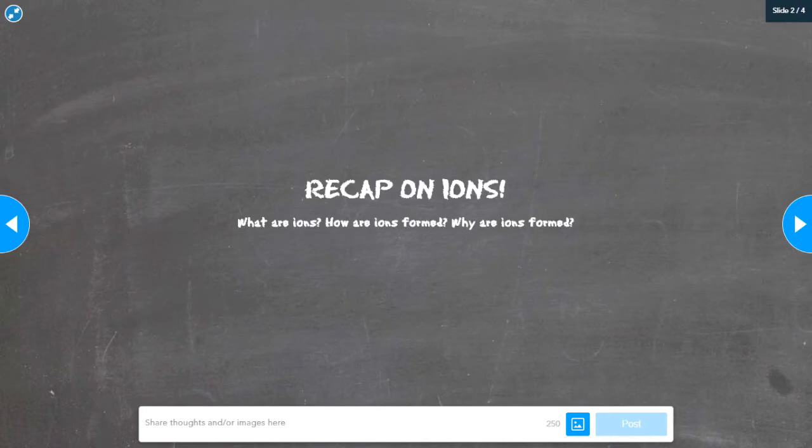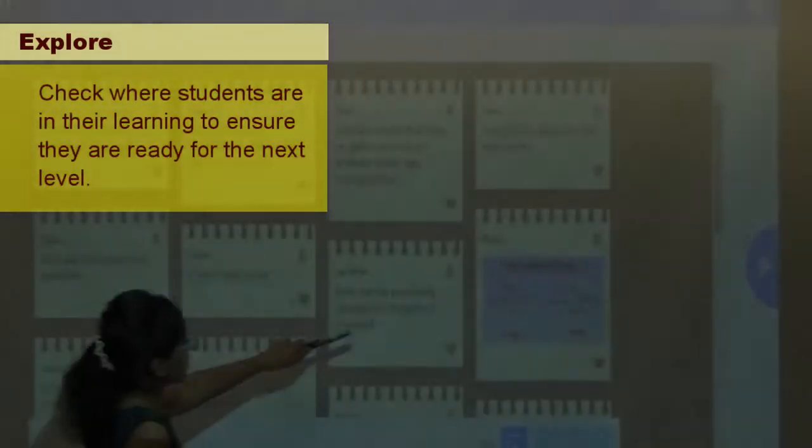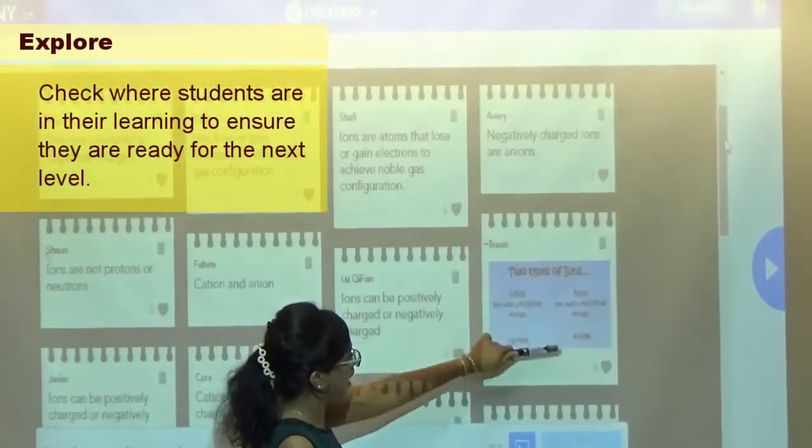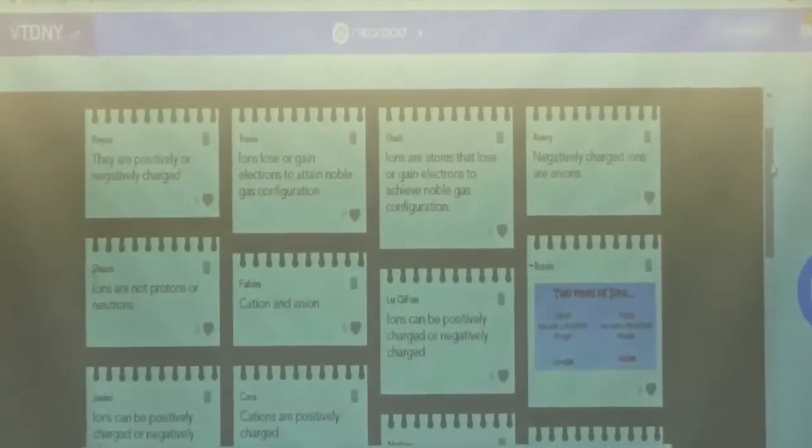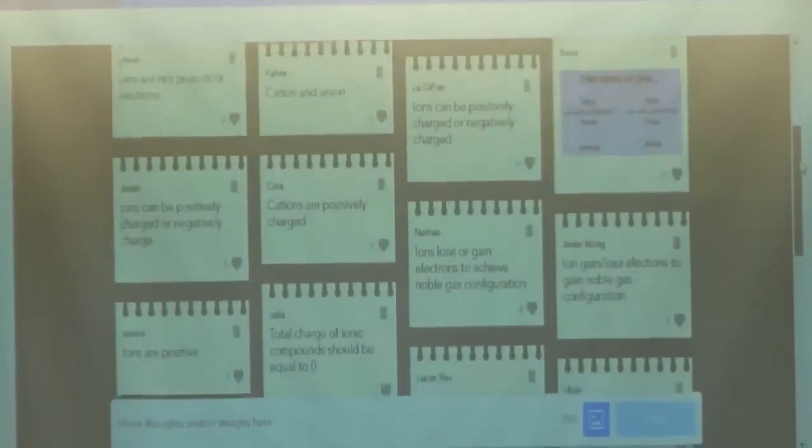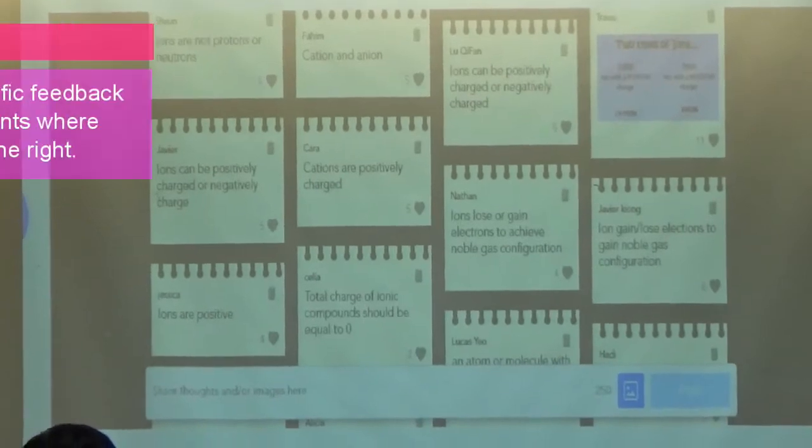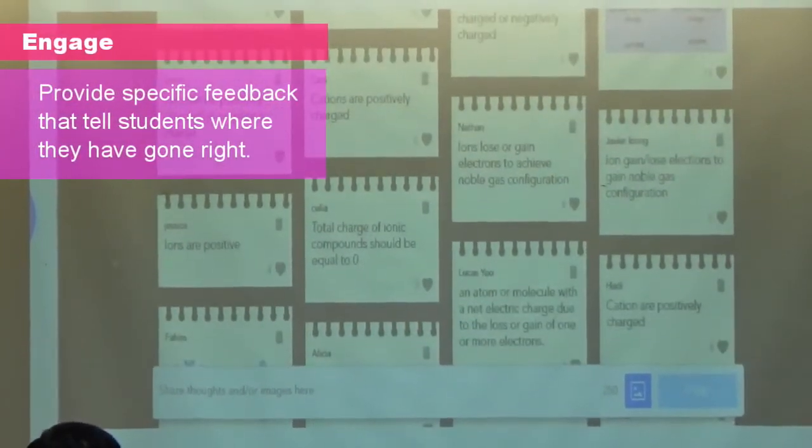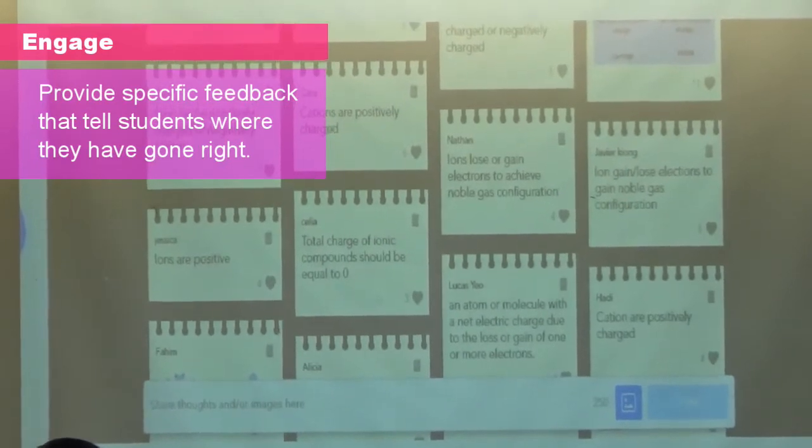Tell me about ions. What do you know about ions? Anything. Or why are they formed in the first place? What's the purpose? Two types of ions: cation and anion. Cations are positively charged. You know, all of you are quite on track. You're saying ions do, so the electrons do. Gain the... what configuration?